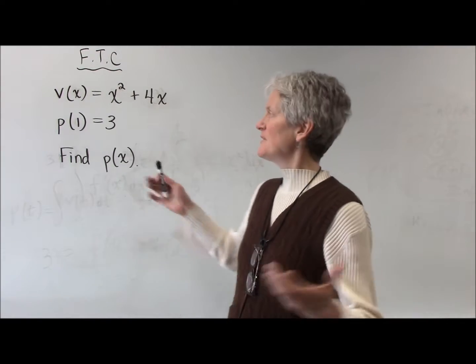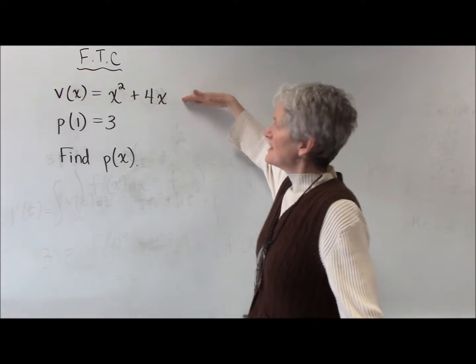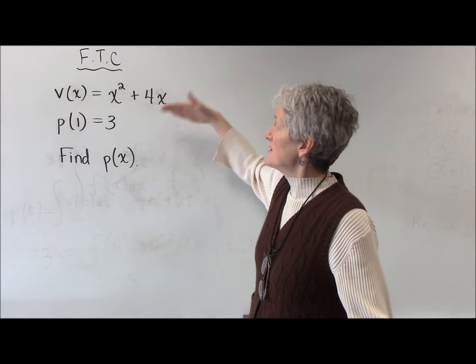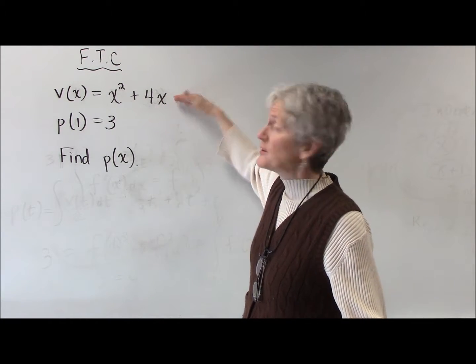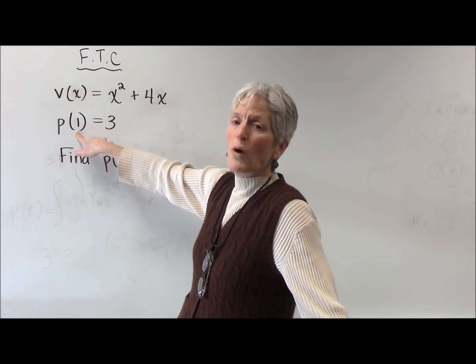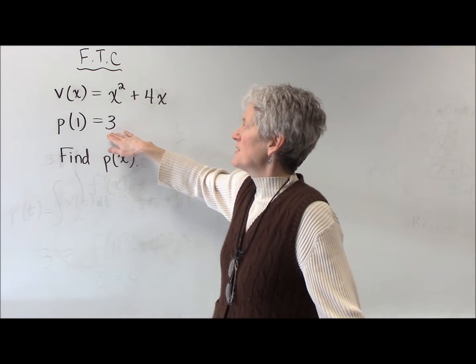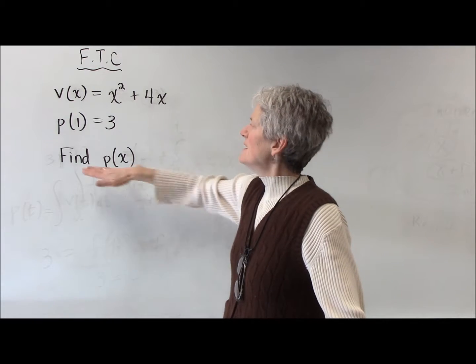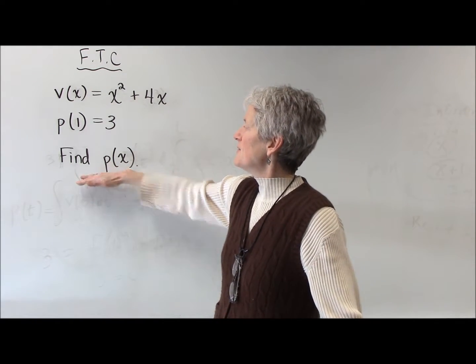So here's one example. We certainly have been dealing with velocity and position functions. If I give you the velocity of a particle at any given x, if I give you that at time 1, the position of the particle is 3 units to the right of the origin, find the function p of x.